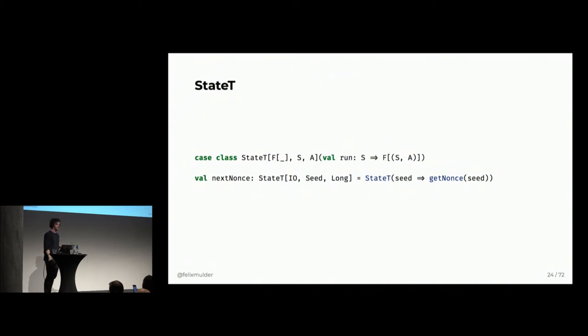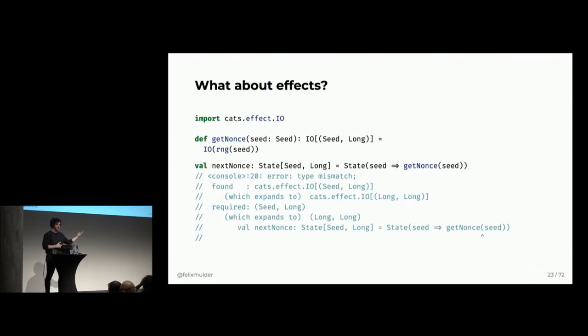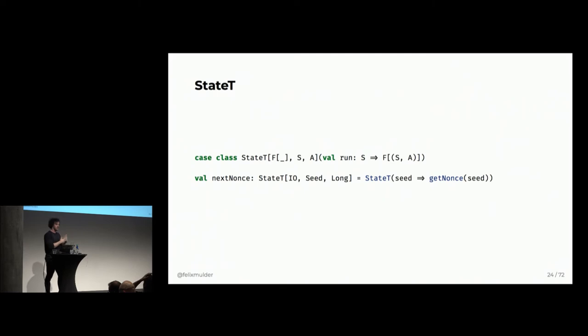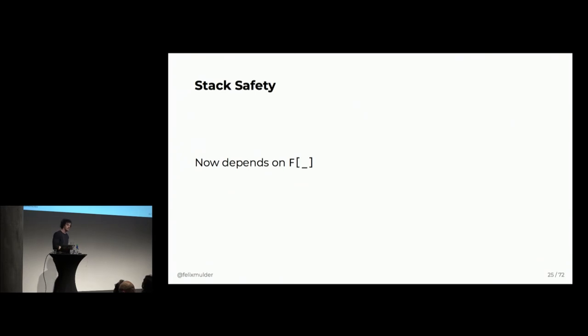So, now, we have a state transformer instead. So, this state transformer takes another argument as a type parameter, this f up here. And we change the definition of the run function to be from state s to the effect container with a tuple inside of an s and an a. So, what this does is that now we can use the same function that we had before in this example. We can simply wrap that and the types line up. So, now we can deal with effects. So, stack safety, we offloaded that into f. So, now it depends on f. Is f stack safe? Well, then state t is also going to be stack safe.